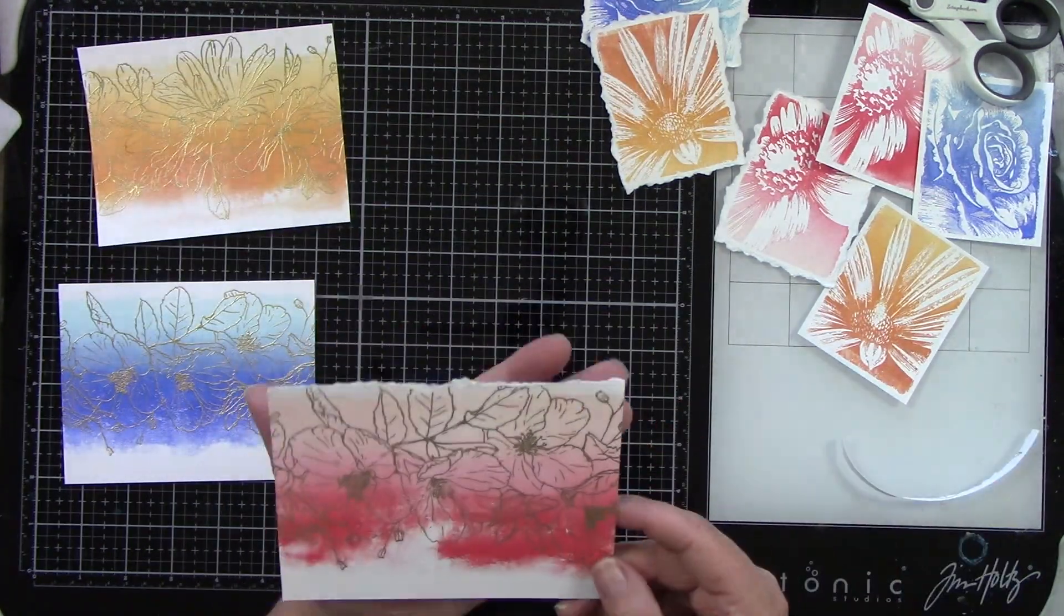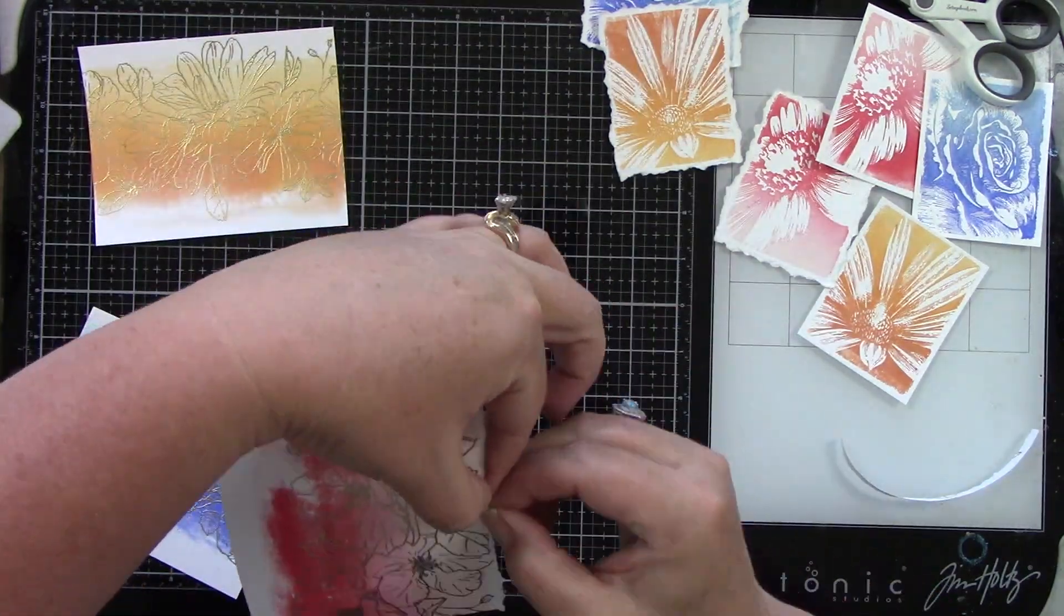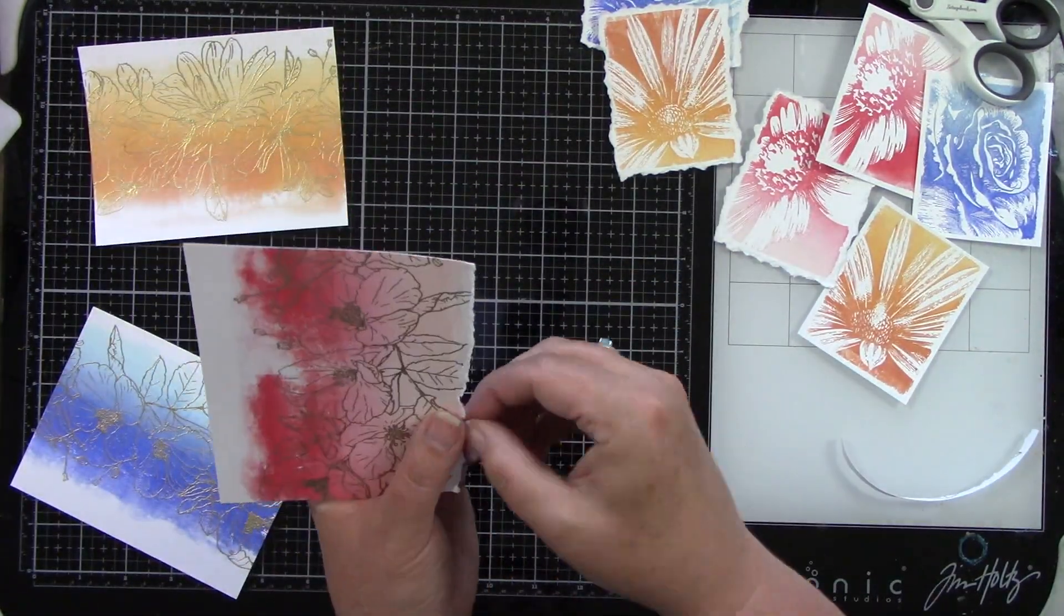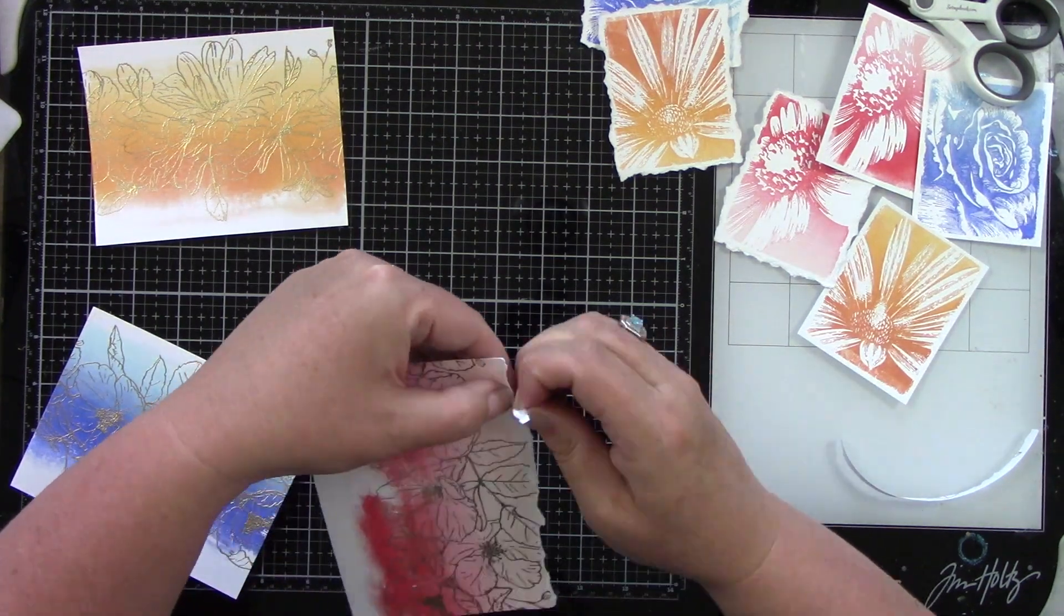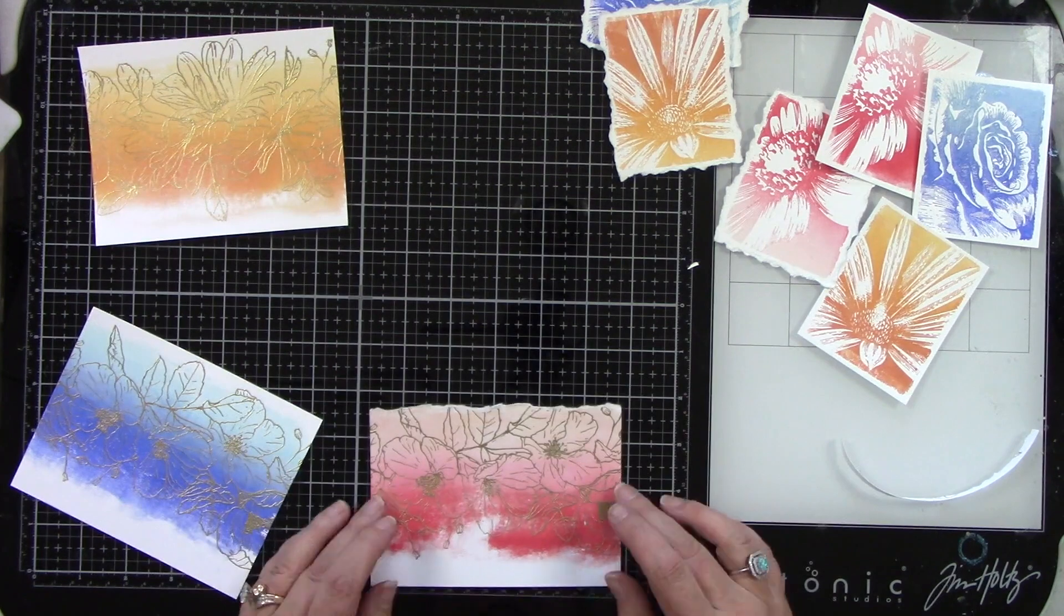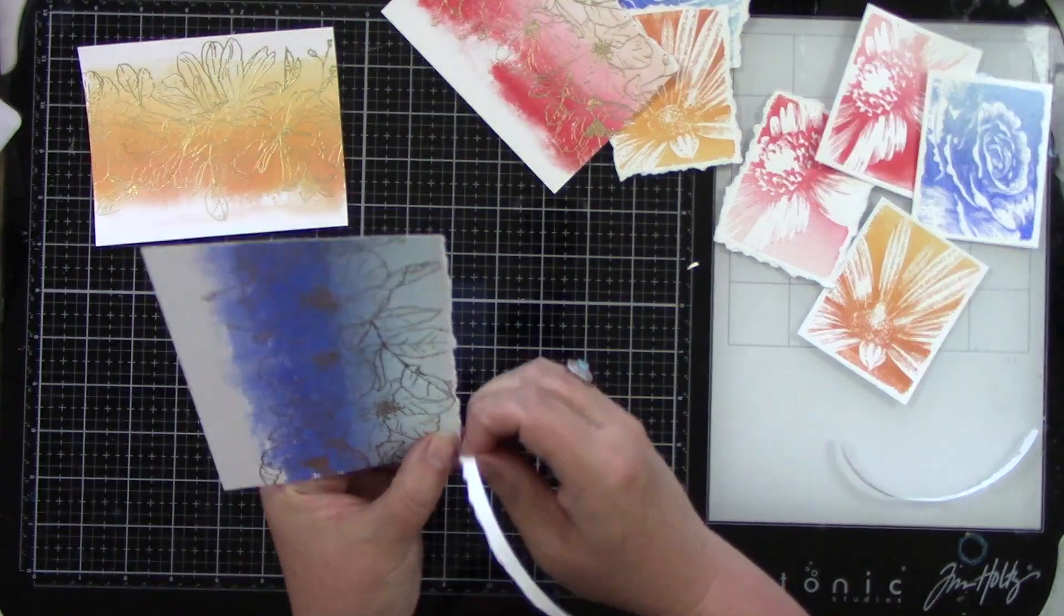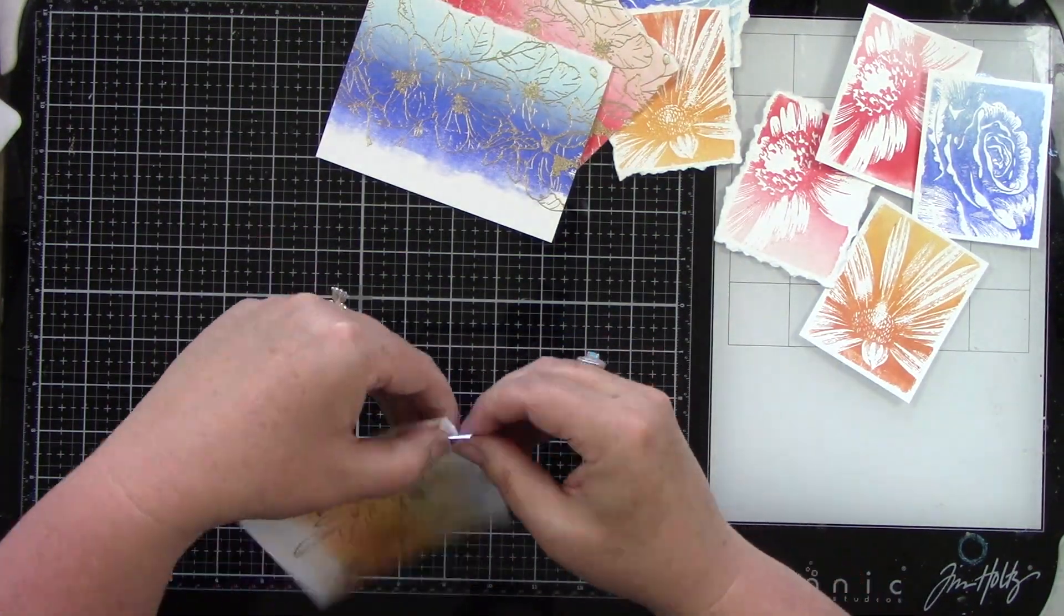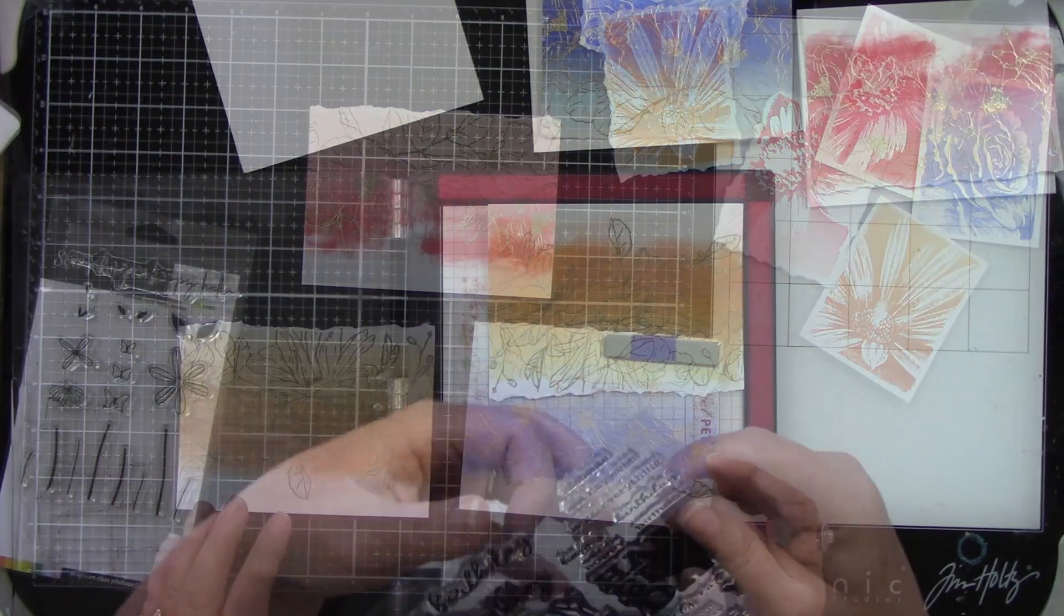Then those other ones that we heat embossed, I am on the top, but I actually changed the orientation. So this is going to be the bottom. I gently tore that too. And I am tearing through embossing powder. And it was totally fine. It was not even a big deal. I'm just making sure that it's straight and not super wonky. So I'm going to do the same thing here. I just like that little torn edge. I think it adds a little something extra. It's super fun.